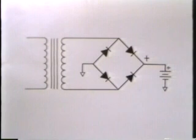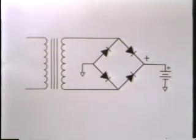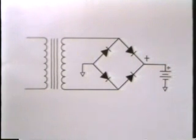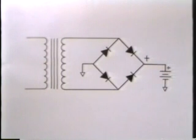The positive output of the bridge rectifier is connected to the positive terminal of the battery. The negative terminal of the bridge is grounded along with the negative terminal of the battery. The remaining two terminals of the bridge rectifier are connected to the secondary winding of the transformer.